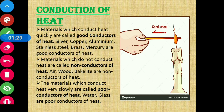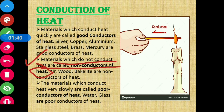Next is the definition of non-conductors of heat. Materials which do not conduct heat are called non-conductors of heat. Examples include air and wood.